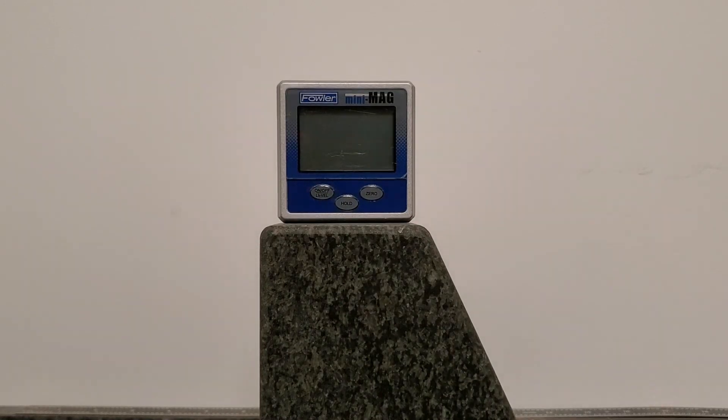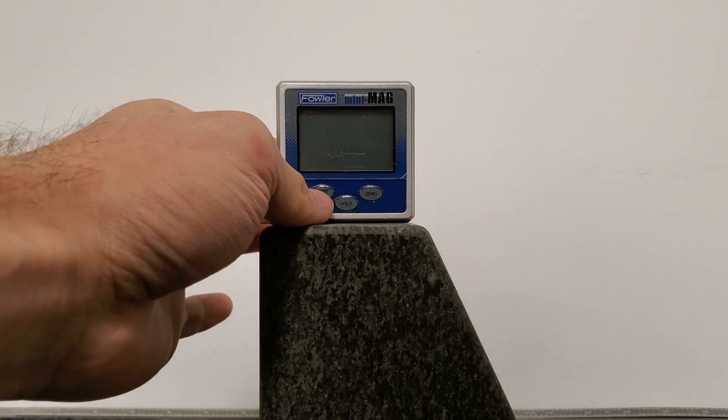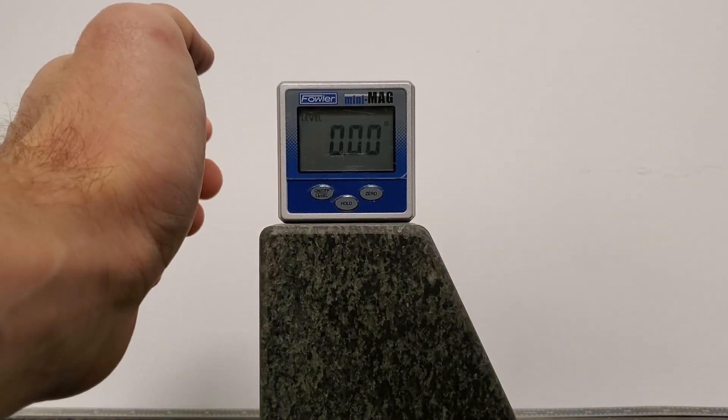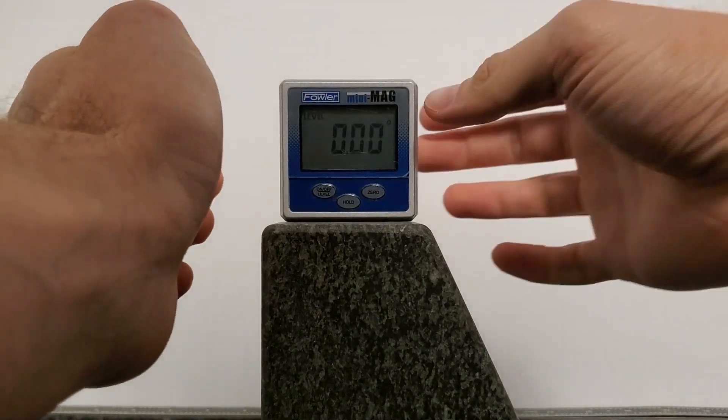Welcome to the Fowler Mini Mag Digital Protractor. Taking an angle measurement is extremely simple. There's a couple of ways to do it. Just power it on. You see it's already zeroed to a surface.